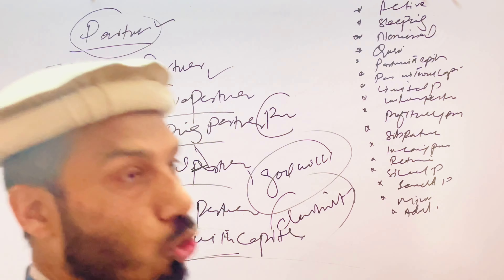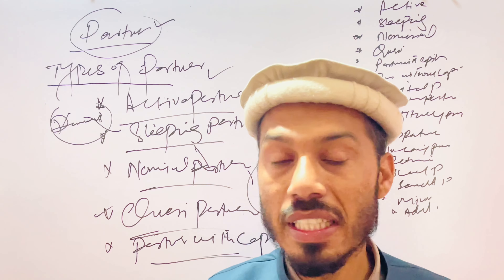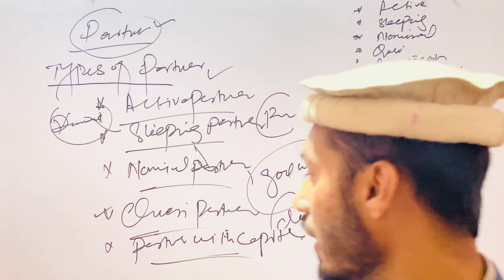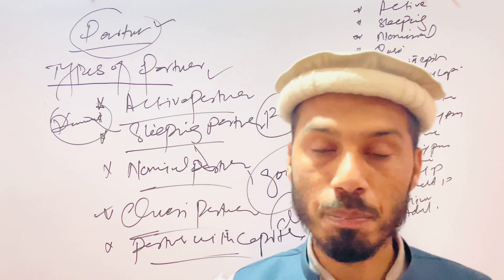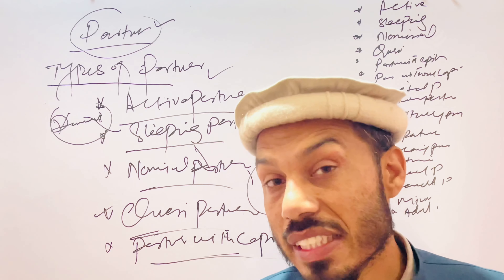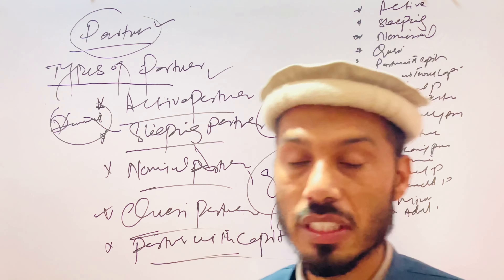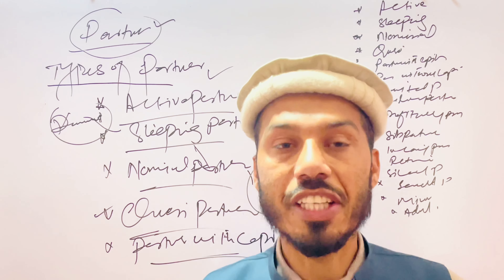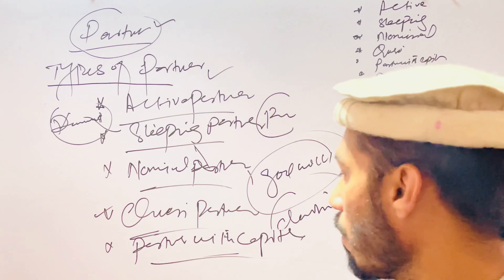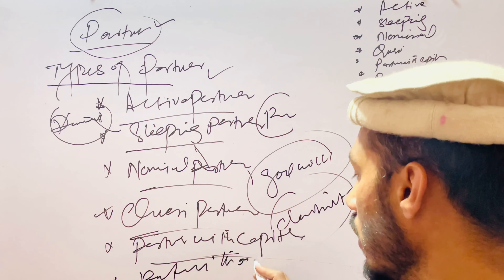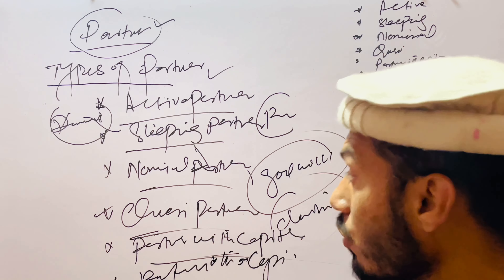The next type is the partner with capital. Partners with capital are those who are only concerned with providing capital — they invest only the amount of money for the operation of the business. Those who only invest capital and do not perform activities are called partners with capital.